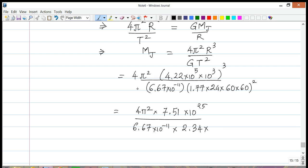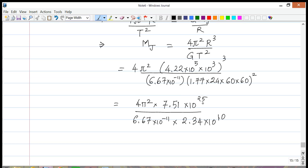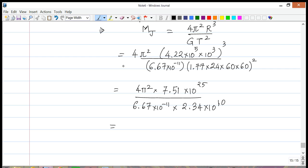All right, so we have this. Now what I can do is first calculate the numerator, calculate the denominator separately. So the numerator becomes 2.96 times 10 to the 27. The denominator, on the other hand, becomes 1.56 times 10 to the—